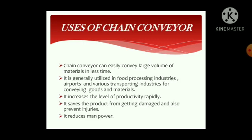Uses of Chain Conveyor. Chain conveyor can easily convey large volumes of materials in less time. It is generally utilized in food processing industries, airports, and various transporting industries for conveying goods and materials. It increases the level of productivity rapidly, saves the product from getting damaged, prevents injuries, and reduces manpower. In this way, there are many uses of chain conveyor across various sectors.